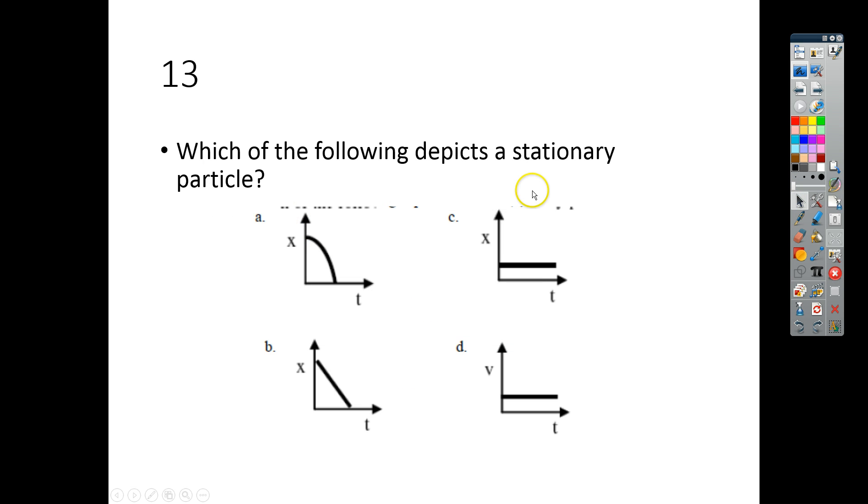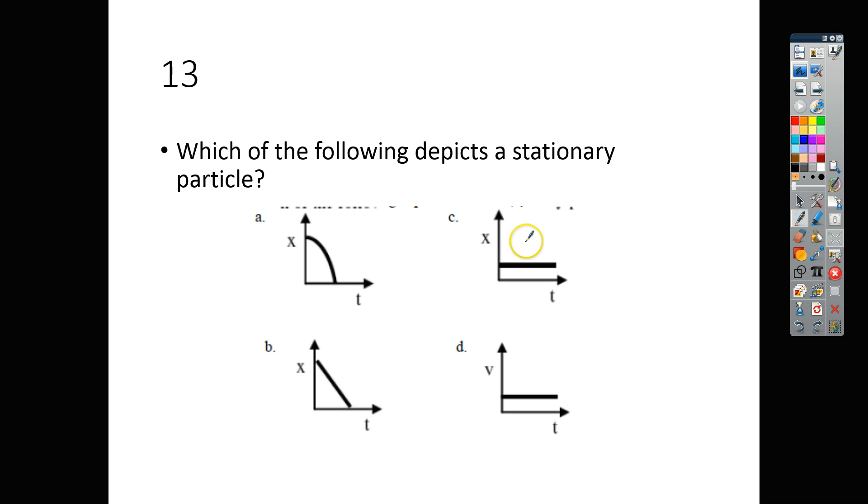For number 13, which of the following depicts a stationary particle? That one is letter C, and it's letter C because you do not change position over a period of time. It is not letter D because this is a constant velocity. Be very careful that you don't just try to memorize these shapes. That doesn't work. You actually have to understand there's a big difference between position versus time and velocity versus time. So letter C is our correct answer.